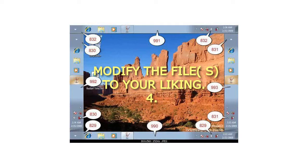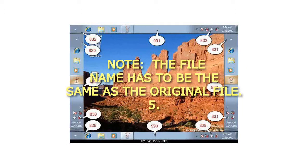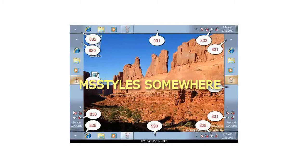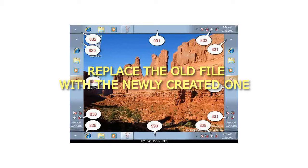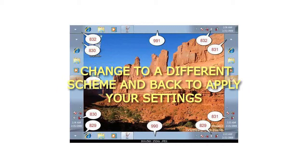Step 4 — in Resource Tuner, select 'Edit Resource' to add the edited image. Note: the file name has to be the same as the original file. Step 5 — select 'Save File As' to create a copy of Aero.mstyles somewhere. Step 6 — replace the old file with the newly created one. Step 7 — change to a different scheme and back to apply your settings.